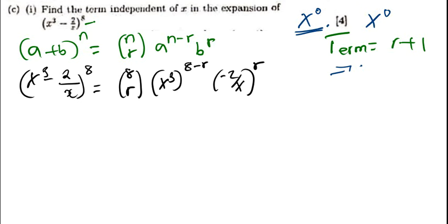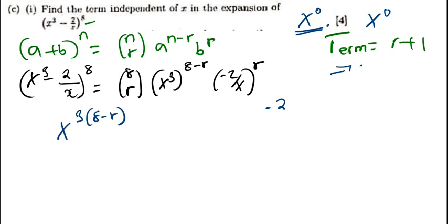So I have got x to the power 3, times 8 minus r, which is this part here. Now how do I get this? When we have negative 2 over x raised to the power r — don't you know that this is basically the same as negative 2 times 1 over x, everything raised to the power r?